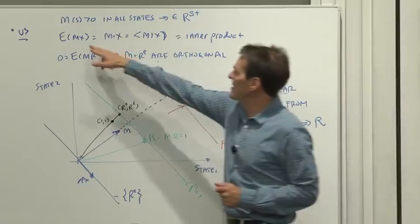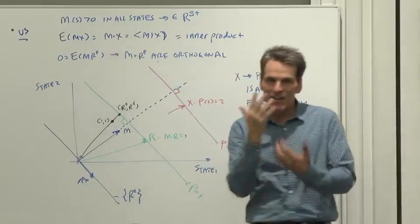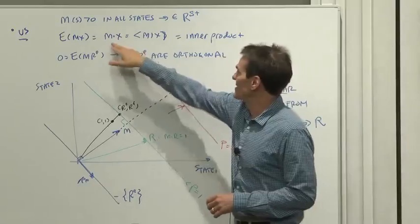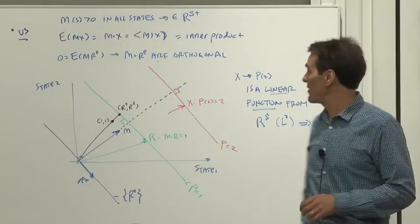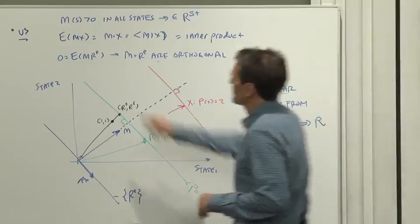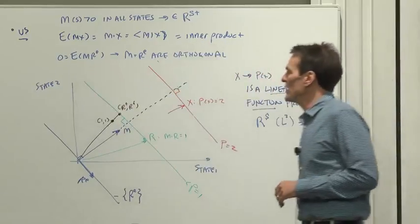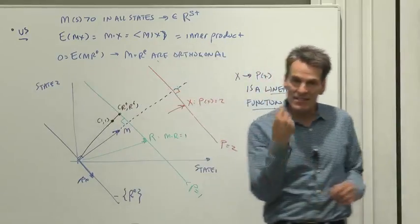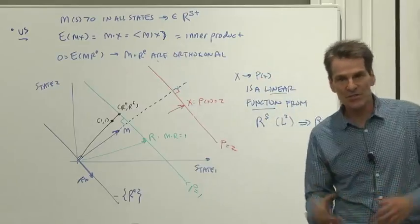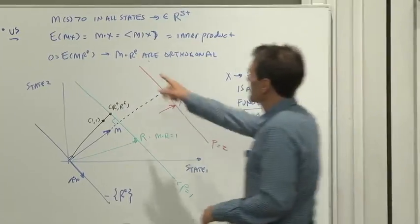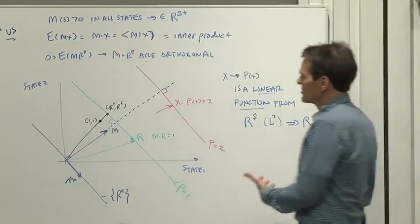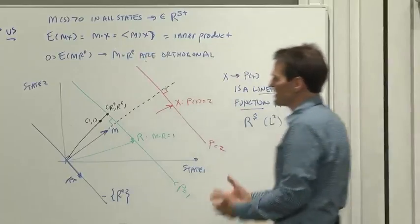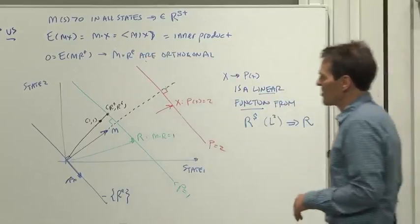When we say e of mx, now we can think of that as an inner product. We can think of that as m dot x, or that's another notation for inner product. And so, for example, if zero equals e of mre, we can then say that the discount factor and excess returns are orthogonal, because there are two vectors whose inner product is zero.